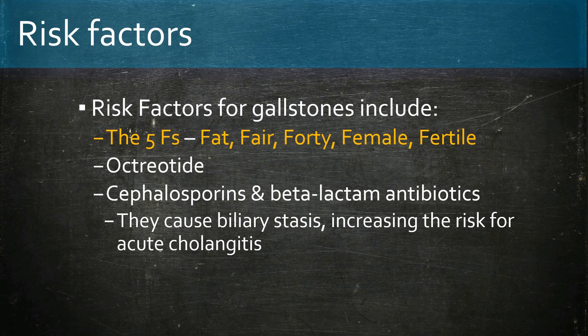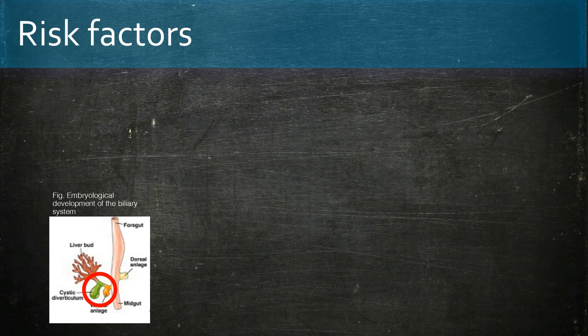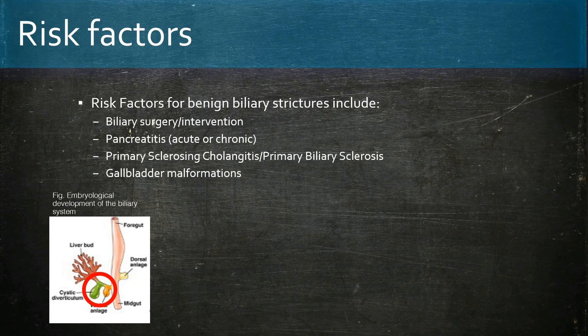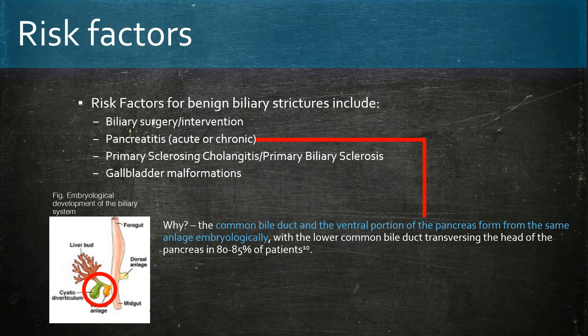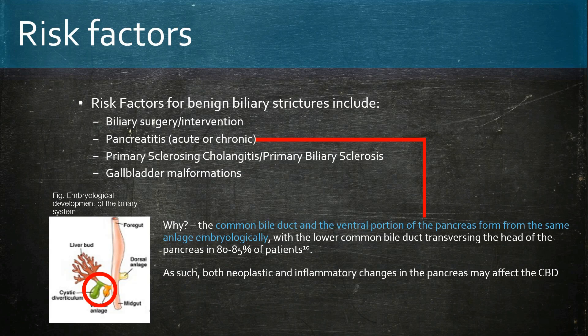Bile strictures can also lead to acute cholangitis by limiting bile flow. Pancreatitis also has an association with bile strictures. This is because the common bile duct and a portion of the pancreas develop from the same source, with the lower common bile duct traversing the head of the pancreas in the majority of patients — about 80 to 88%. As such, both neoplastic and inflammatory changes in the pancreas affect the common bile duct.